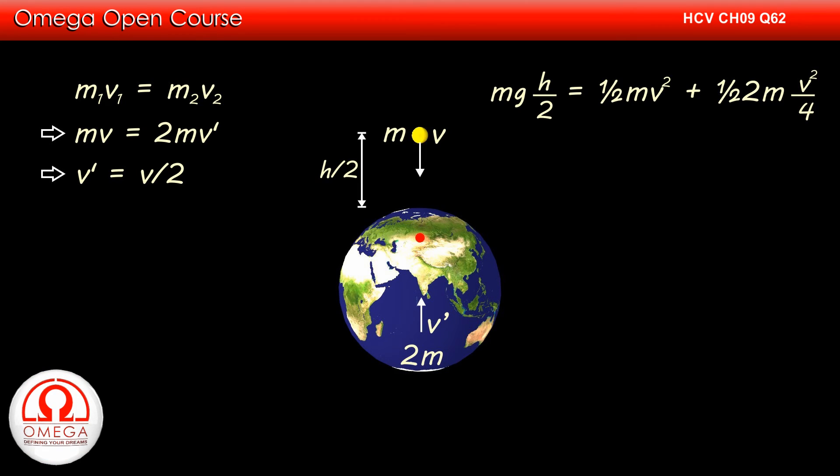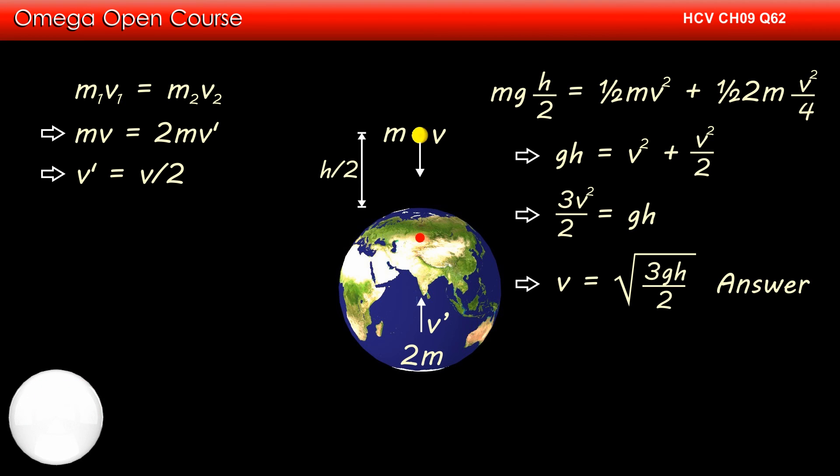Or mgh/2 = (1/2)mv² + (1/2)(2m)(v²/4). Dividing both sides by m/2, we get gh = v² + v²/2 which implies 3v²/2 = gh or v = √(2gh/3). This is our answer.